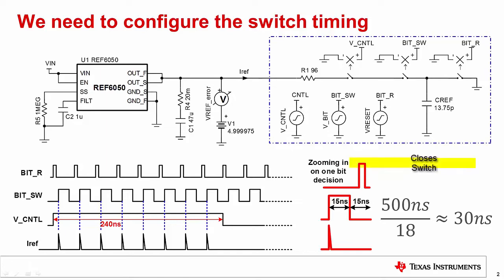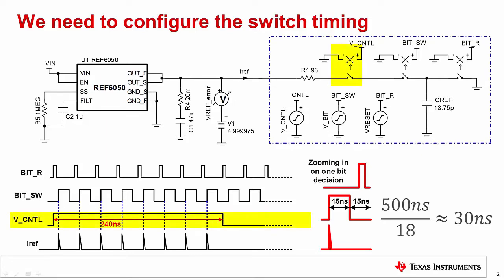A logic high on the control signal closes the switch, and a logic low opens the switch. Note that for this design, we will be modeling eight MSB ZDAC bit decisions. This is done by connecting the CREF to the reference output eight times via the control and bit switches. The control switch acts as a gate to allow eight bit switches to pass through. In other words, the bit switch is running continuously, so the control switch is used to select the number of times the bit switch connects CREF to the voltage reference.